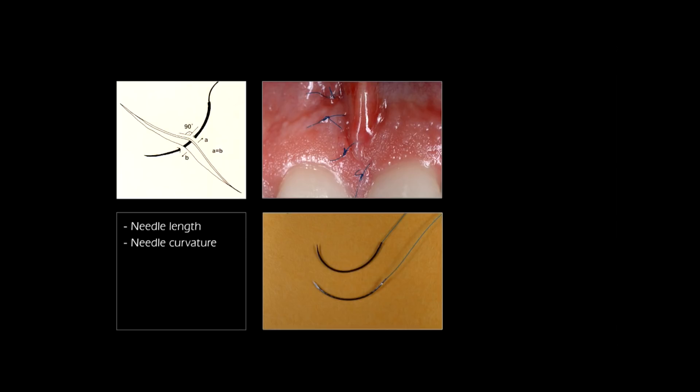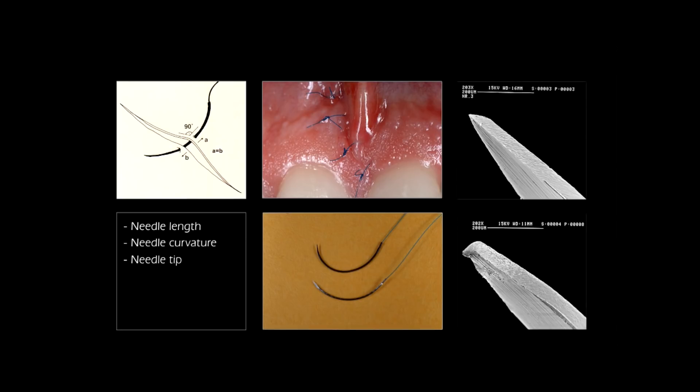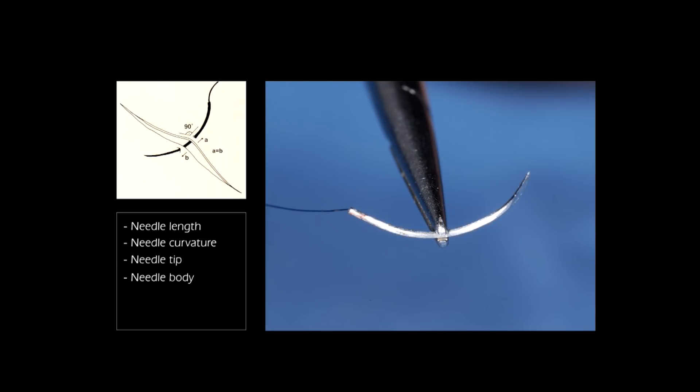An important aspect of the needle is its tip. Since we are generally dealing with very coarse tissues, needle tips must be very sharp. However, it depends on the tissues: for example, when suturing the Schneiderian membrane in a sinus augmentation, the needle tip must be rounded, otherwise a very sharp needle will open or enlarge any tear.